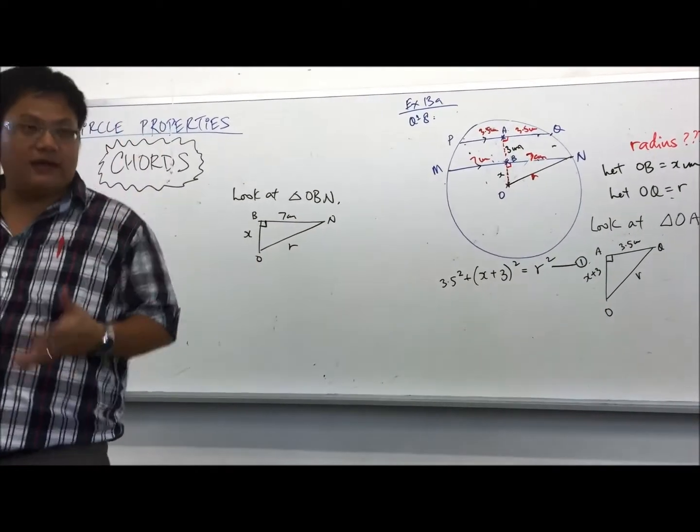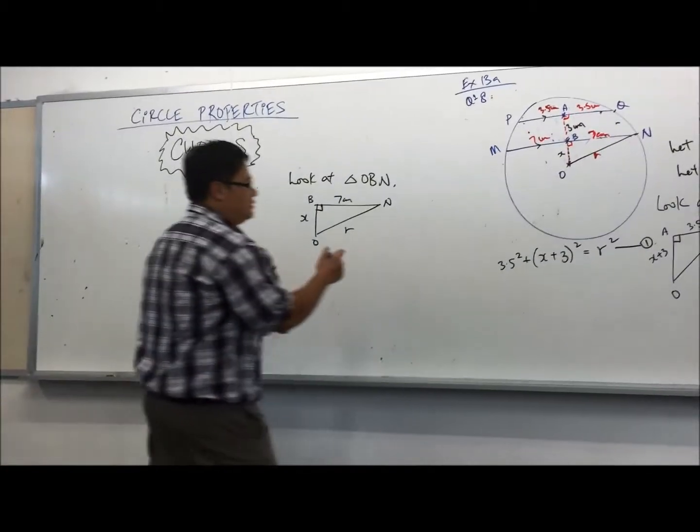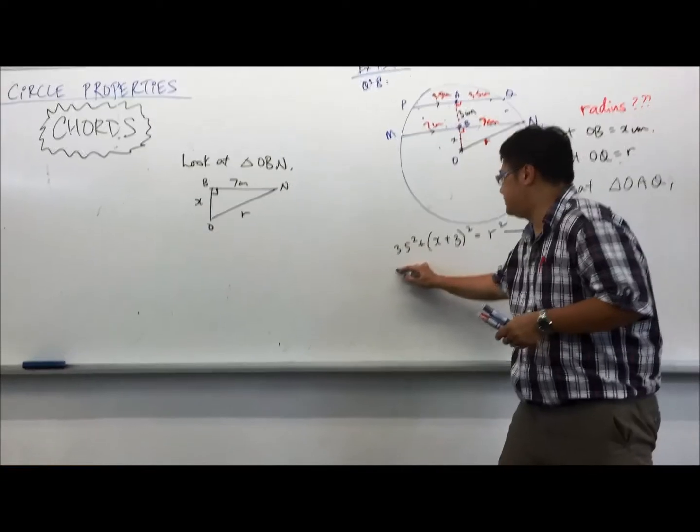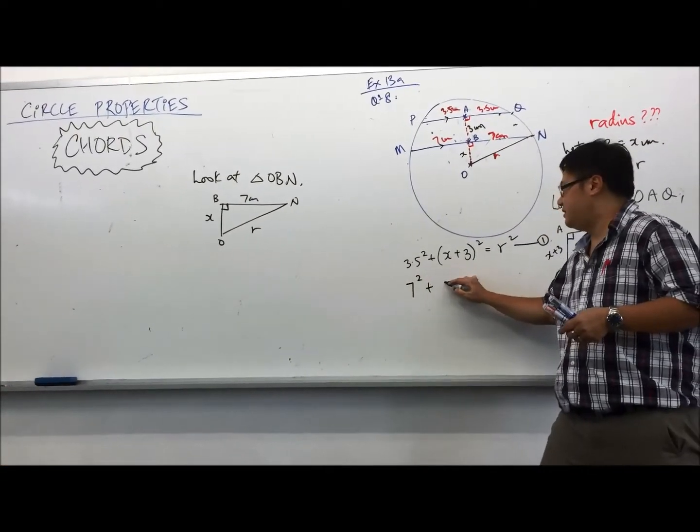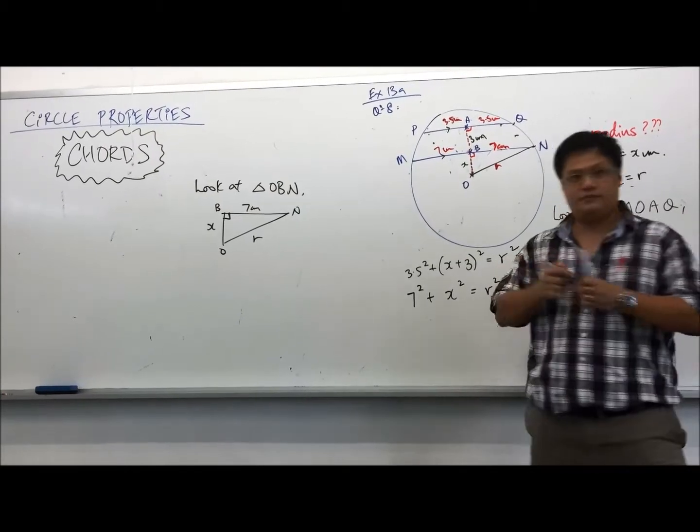Can we form another equation using Pythagoras theorem? What do we have? 7 square plus x square equals r square. 7 square plus x square. X square. R square. Very good.